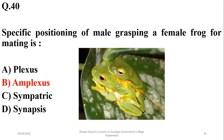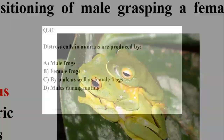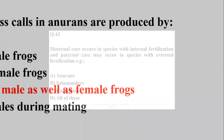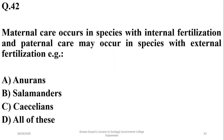The specific positioning of the male grasping a female frog for mating is termed amplexus, and it ensures fertilization of the maximum number of eggs released by the female. So the right option is B. Distress calls in anurans are produced by both males and females when captured by a predator.